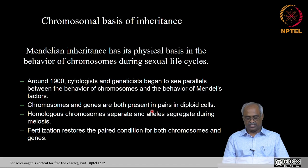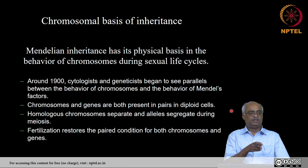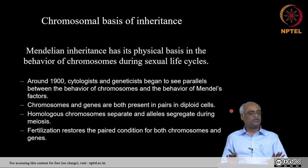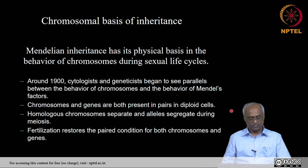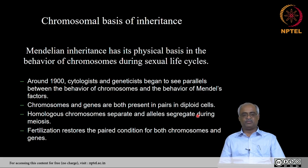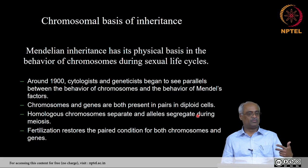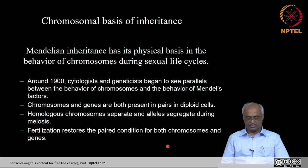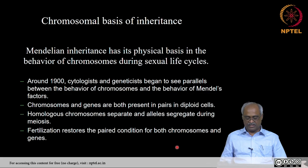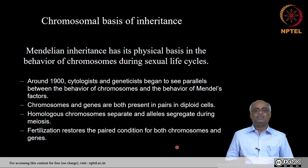Chromosomes and genes both exist in pairs. In our cells we have 23 pairs — among the 46 chromosomes, you can sort them into 23 pairs. They exist in pairs like Mendel's capital P capital P or small p small p. Homologous chromosomes separate and alleles segregate during meiosis — only one of the two chromosomes comes to a gamete, just as Mendel assumed only one allele goes into a gamete. Fertilization restores two copies together, just as homologous chromosomes come together again.